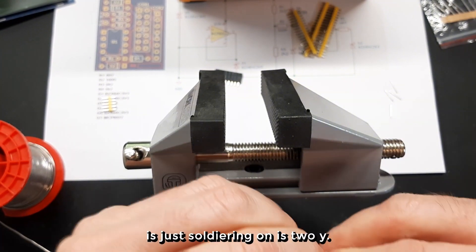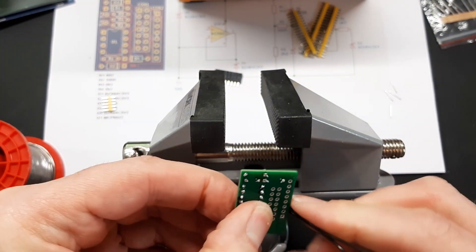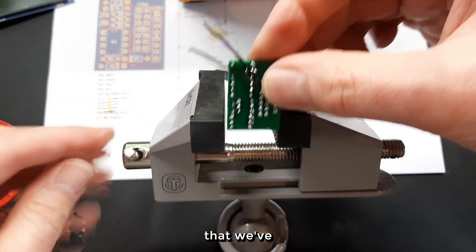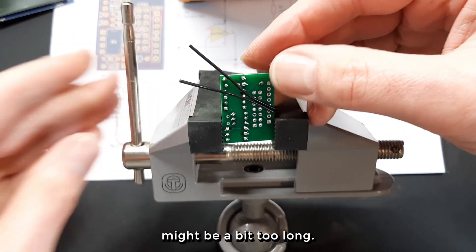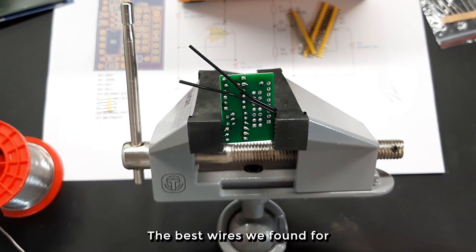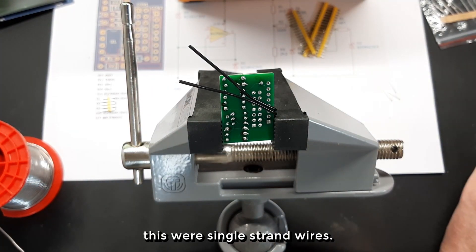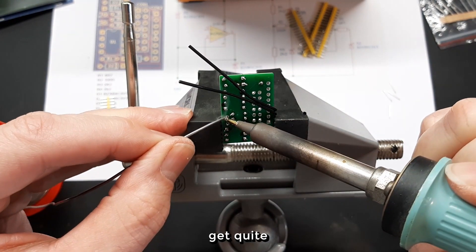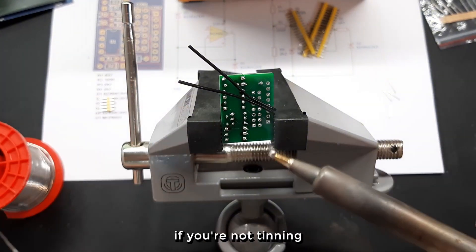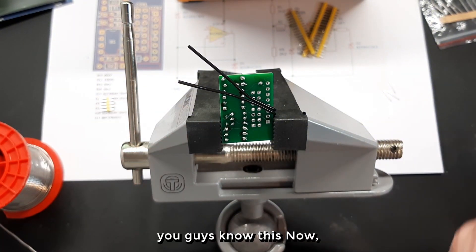So Steve is just soldering on his two wires. You don't have to use the wires that we provided in the kits. Sometimes those wires might be a bit too long. The best wires we found for this were single strand wires. We found that multi-strand conductors get quite brittle, especially if you're not tinning the ends right, but of course you guys know this.